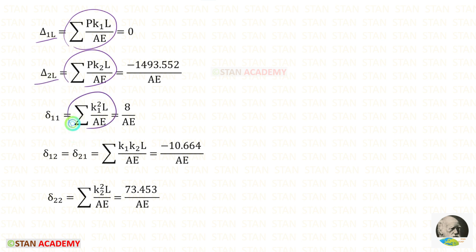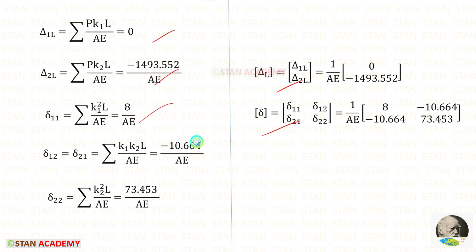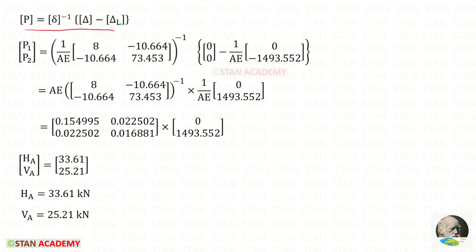After adding we get the summation values. Using the formula we find delta-1L, delta-2L, delta-11, delta-12, delta-21, and delta-22. Nothing is mentioned about area or Young's modulus in the question, so we assume area and Young's modulus are the same for all members. In the two matrices, we take 1/(AE) outside. Applying the formula and matrices, taking the inverse of the flexibility matrix using a calculator — we can take AE outside as AE — and after computing the inverse, we eliminate AE.